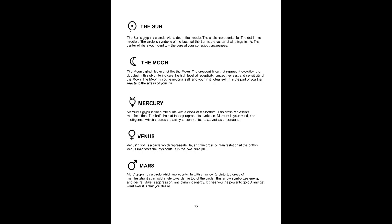Mars. Mars' glyph has a circle which represents life, with an arrow — a distorted cross of manifestation — at an odd angle towards the top of the circle. This arrow symbolizes energy and desire. Mars is aggression and dynamic energy, and it gives you the power to go out and get whatever it is that you desire.